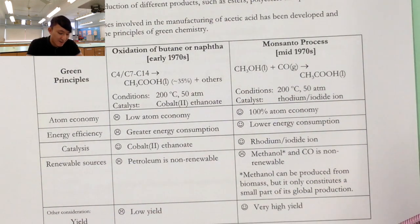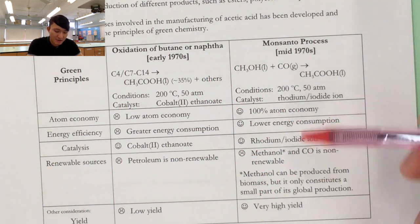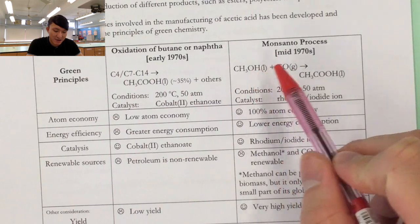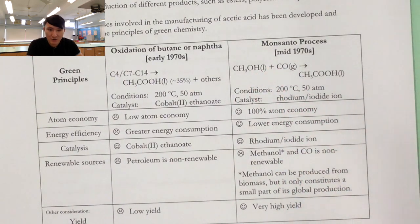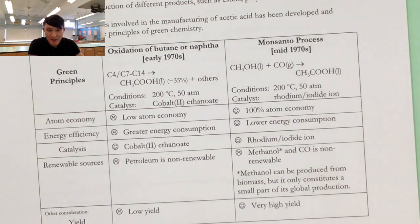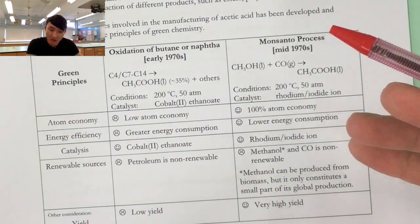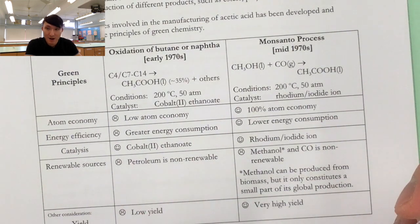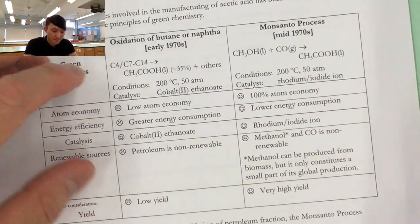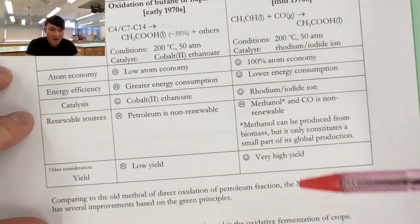Now other considerations. When we talk about yield, the first method has a very low yield, whereas the second method has a very high yield. Probably because the reaction between methanol and carbon monoxide under the action of a certain catalyst is very specific. So it will make a single product and not many side products. But this one, you see, you have a mixture of hydrocarbons simply doing oxidation with oxygen. Probably it will come up with a mixture of different products. So this one has a very low yield. So here, the conclusion is Monsanto process is considered as greener than the direct oxidation.